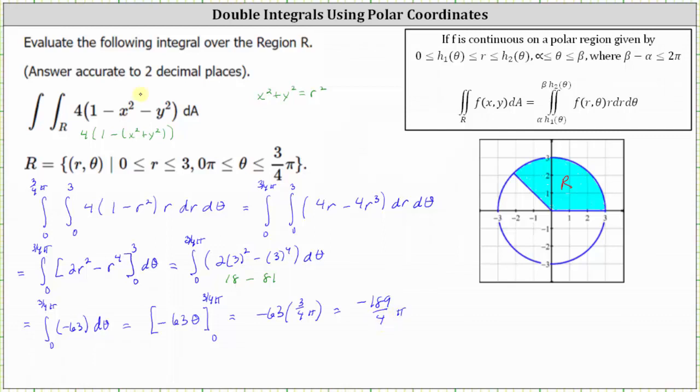The question does mention being accurate to two decimal places. So if we did want to round, this would be approximately negative 148.44. I hope you found this helpful.